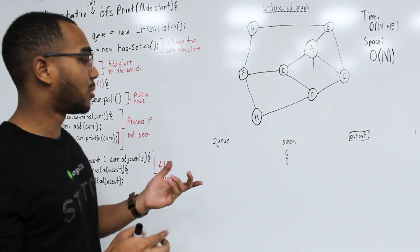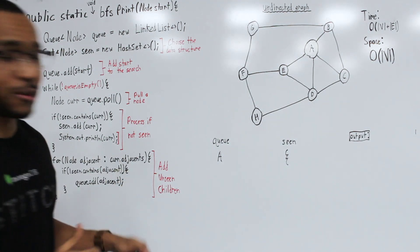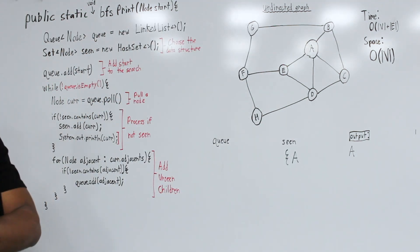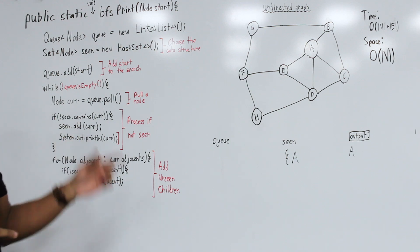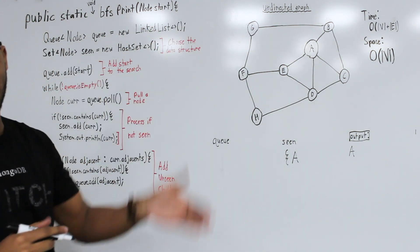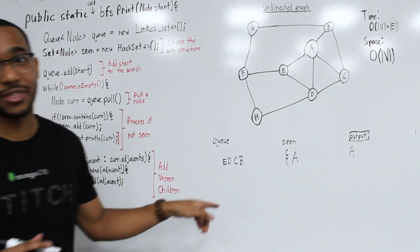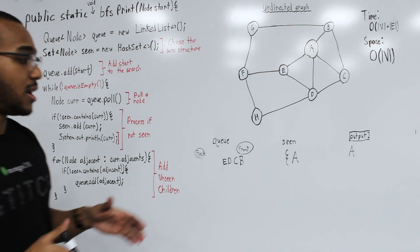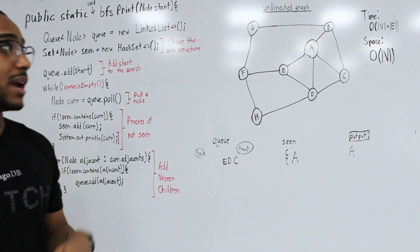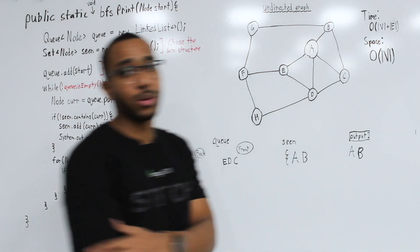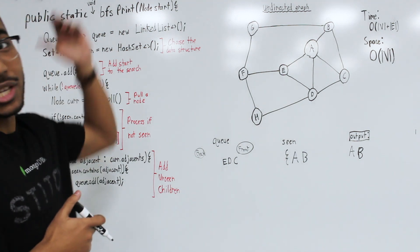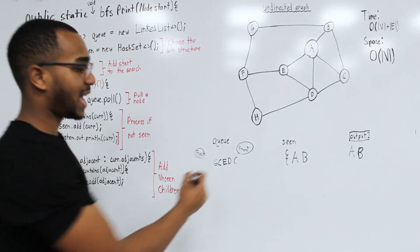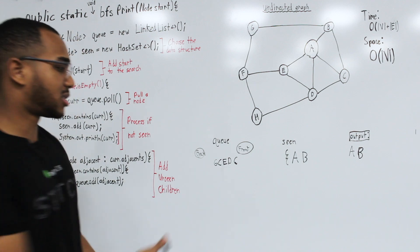Let's do BFS on this graph. We start with A, add it to the queue, pull A — not seen, process A. We add A's children B, C, D, and E to the back of the queue. We pull from the front: B is not seen, we process B and output it. G has not been seen, A has, C has not — so we add G and C to the back of the queue. We then process C, output C, and add D since A and B have been seen.